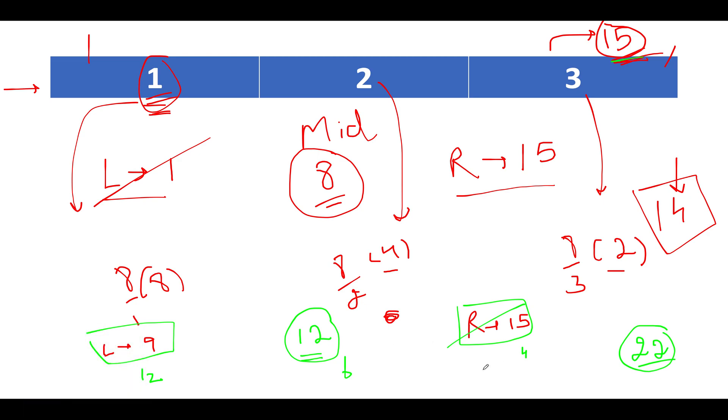So right now points to mid. Let me just change the color of pen for the third iteration. Right becomes 12 instead of 22 or instead of 15. Left remains the same, which happens to be 9. Now we have left as 9, right as 12. Let's calculate the middle one. 9 plus 12 gives you 21, 21 by 2 gives you 10.